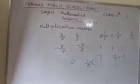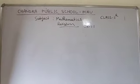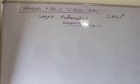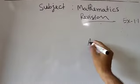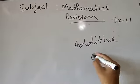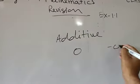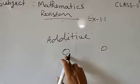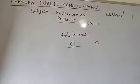Is there any number whose additive inverse will be the same as the number? What will be the additive inverse of 0? If you write minus 0 — 0 is the number which is neither positive nor negative. So the additive inverse of 0 is 0. Zero is the number whose additive inverse is 0, the same number.